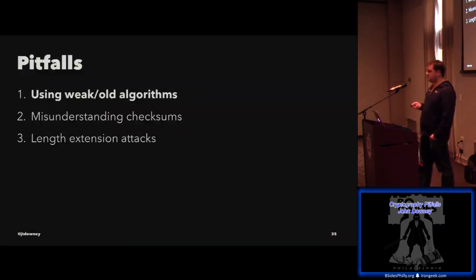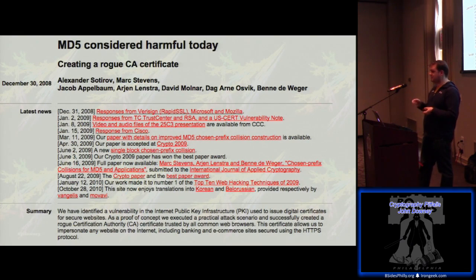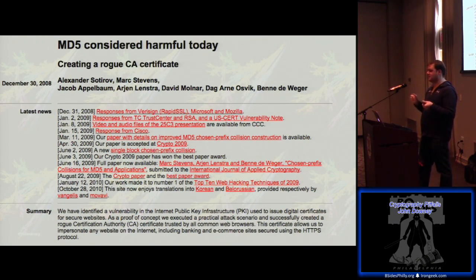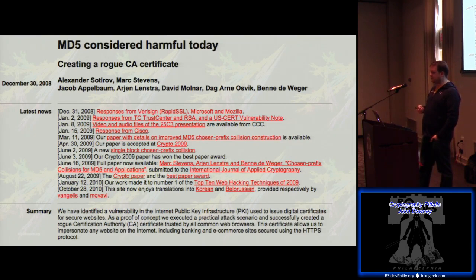First hash pitfall: using old weak algorithms. In 2008, researchers used a cluster of PS3s to predict the MD5 hash function output when it came to a digital certificate — specifically, something they got from a CA — such that they could match what the CA's output was going to be when they signed their certificate, but applied to their own inputs. This used previously unknown problems with MD5 and took a lot of computation, which is why they used the PS3s. This was sort of the death knell for MD5 in the CA industry — people were obviously still using it — so they used this to get themselves their own intermediate CA certificate as a demo.